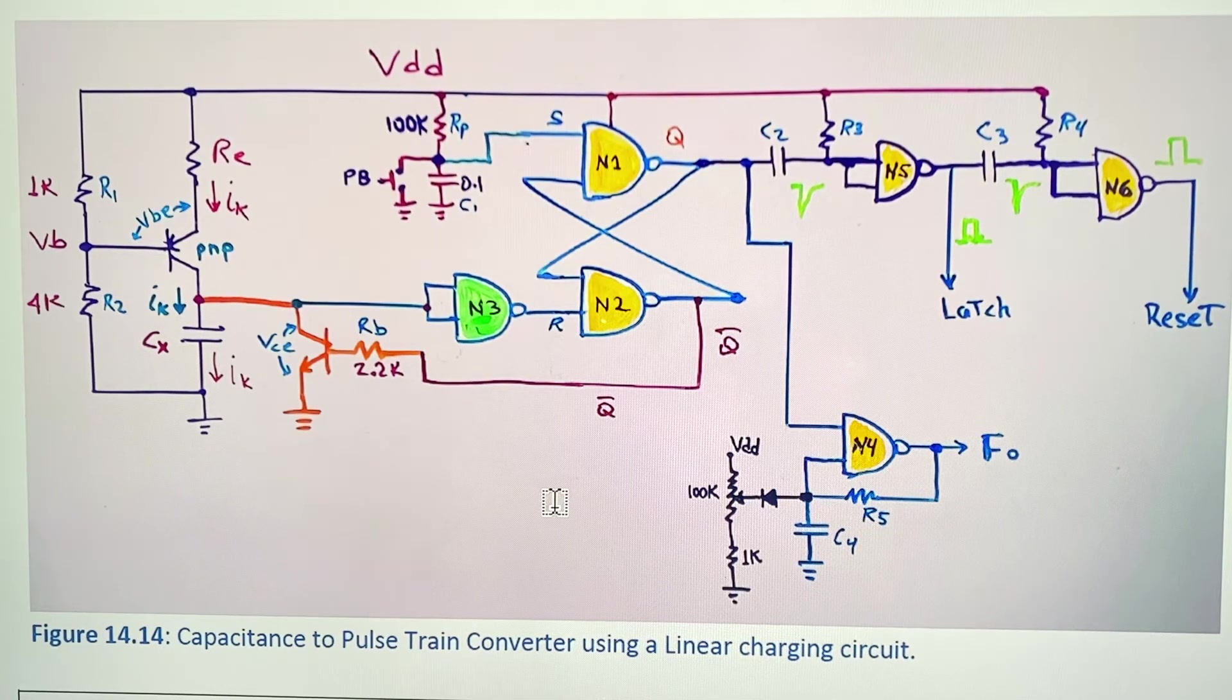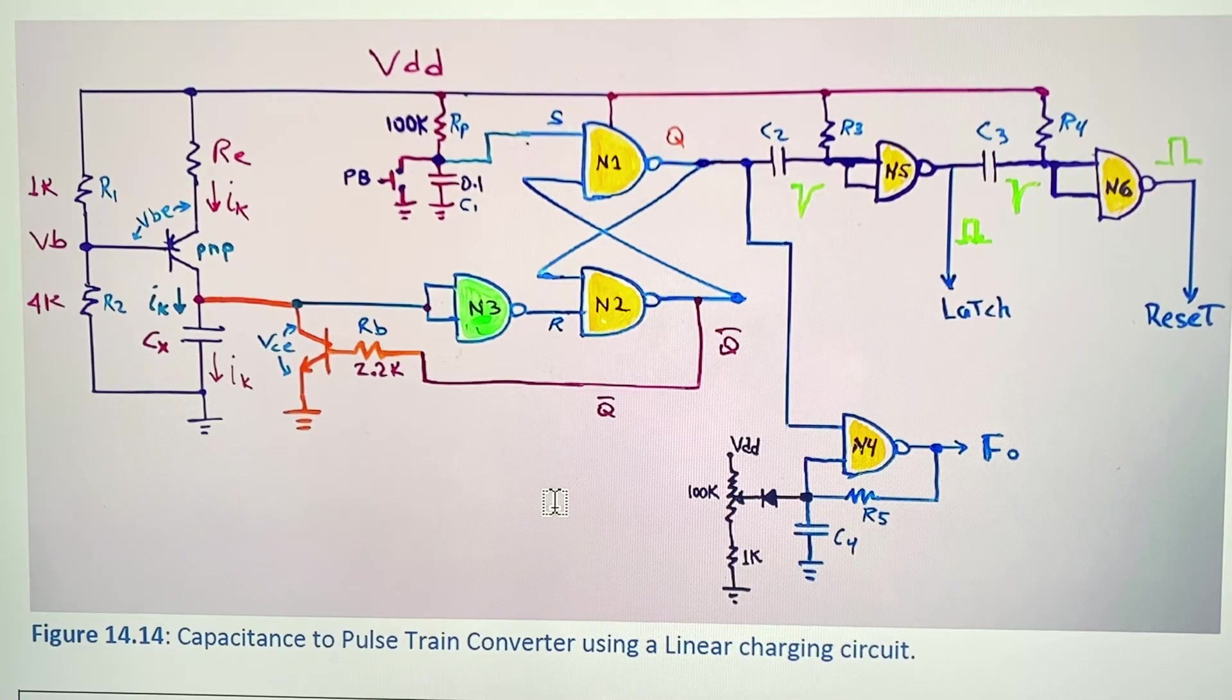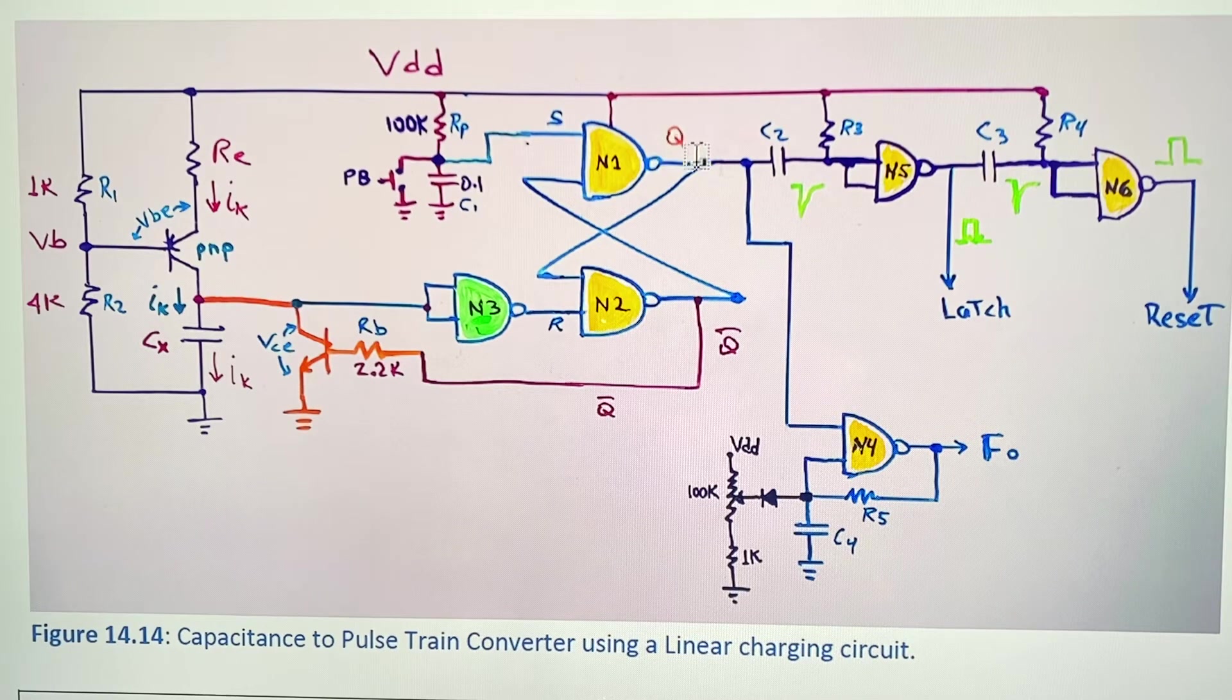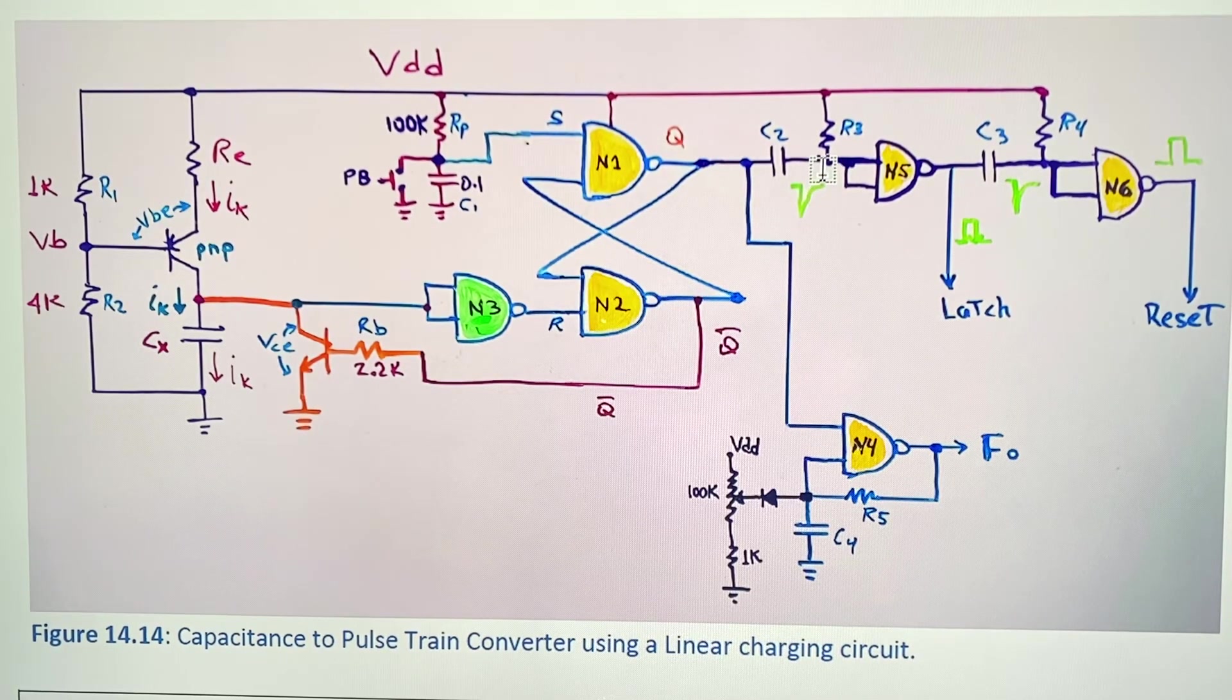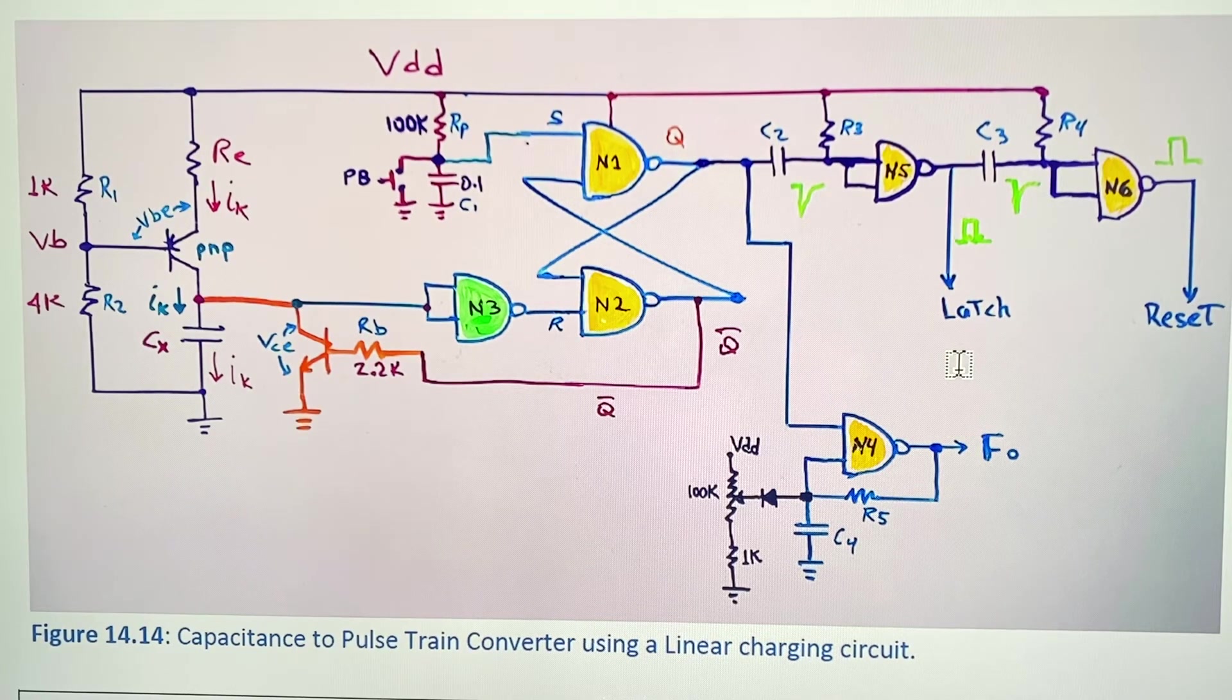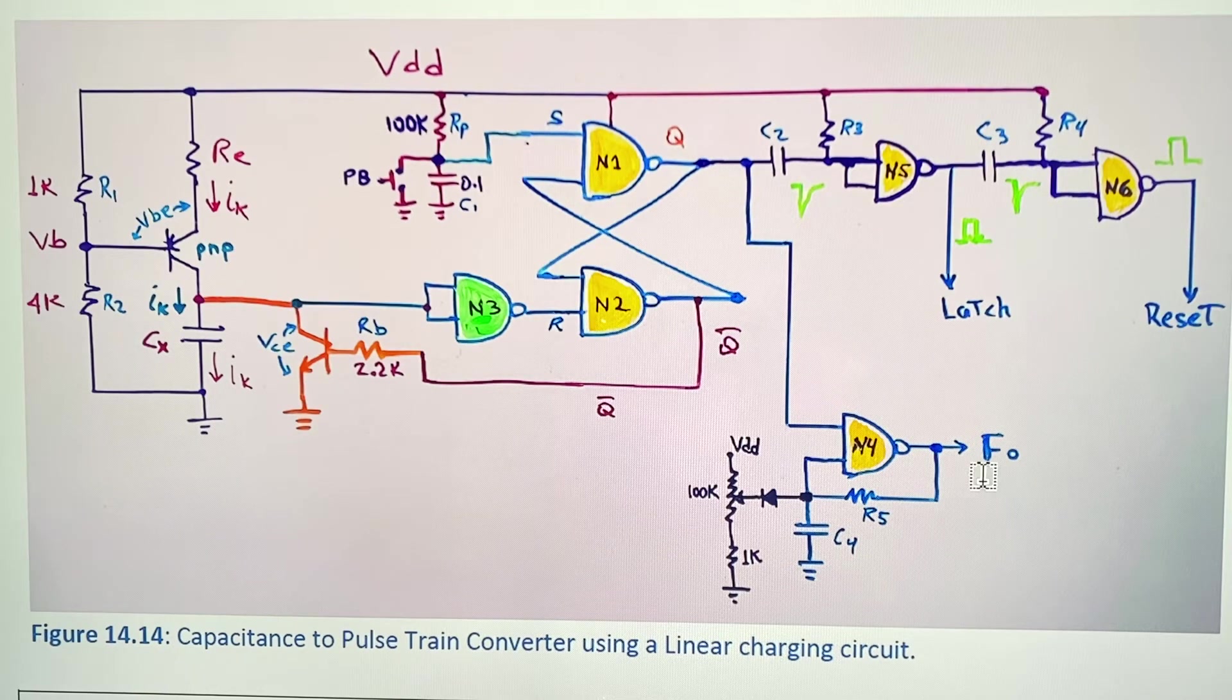This will be an experiment that all of you in class will test. We can adjust the scope to see the Q signal, the signal on this point, and you can also see the latch and reset.